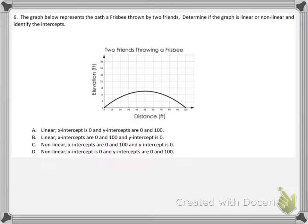Number 6: The graph below represents the path the Frisbee is thrown by two friends. Determine if the graph is linear or nonlinear and identify the intercepts. Well, keep in mind that the word linear means the graph is straight, and the word nonlinear means the graph is curved. So immediately, you can knock off choices A and B because this graph is a curved graph, so it's nonlinear.